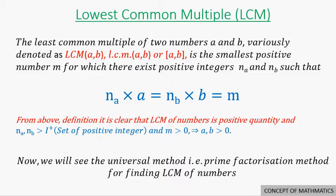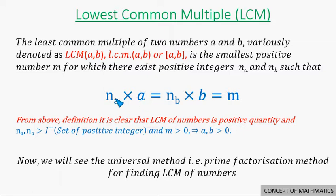Now we will define the least common multiple of two numbers. The least common multiple of two numbers A and B, variously denoted as LCM(A, B) or by using square brackets [A, B], is the smallest positive number M for which there exist positive integers N_A and N_B such that N_A times A equals N_B times B equals M.